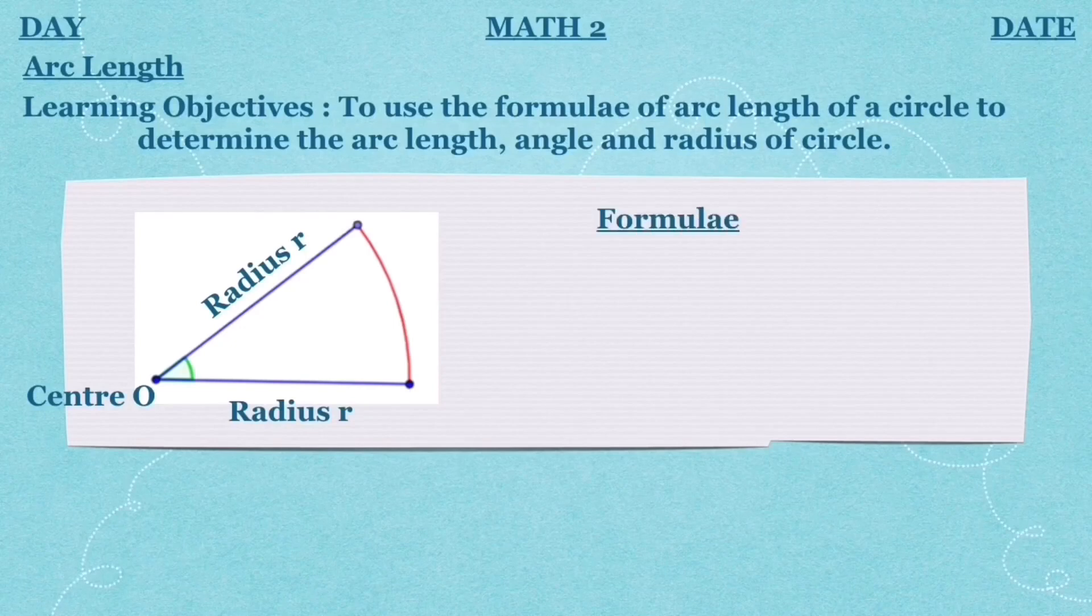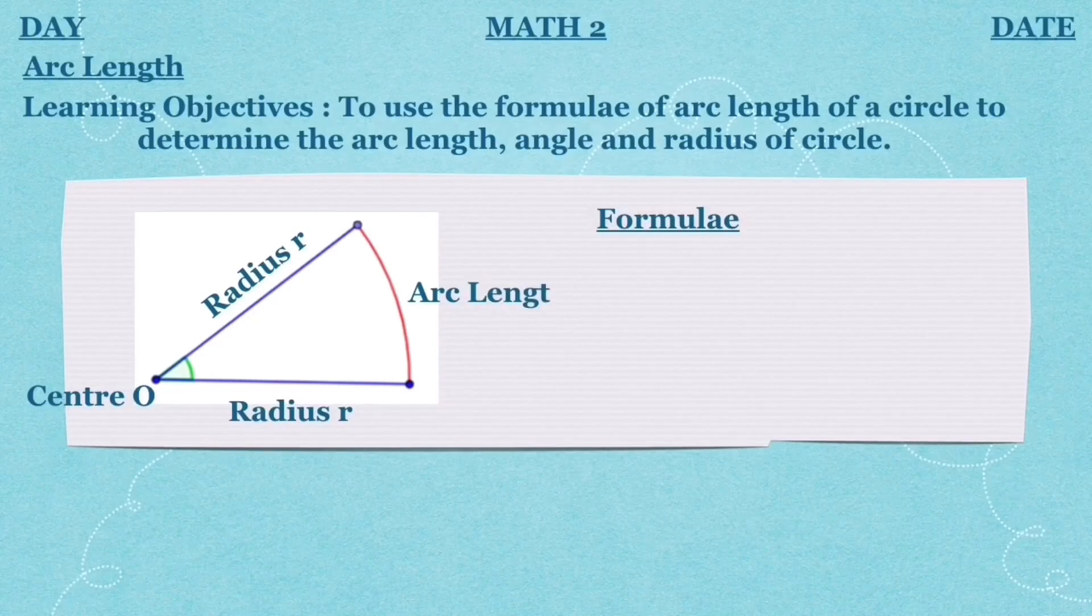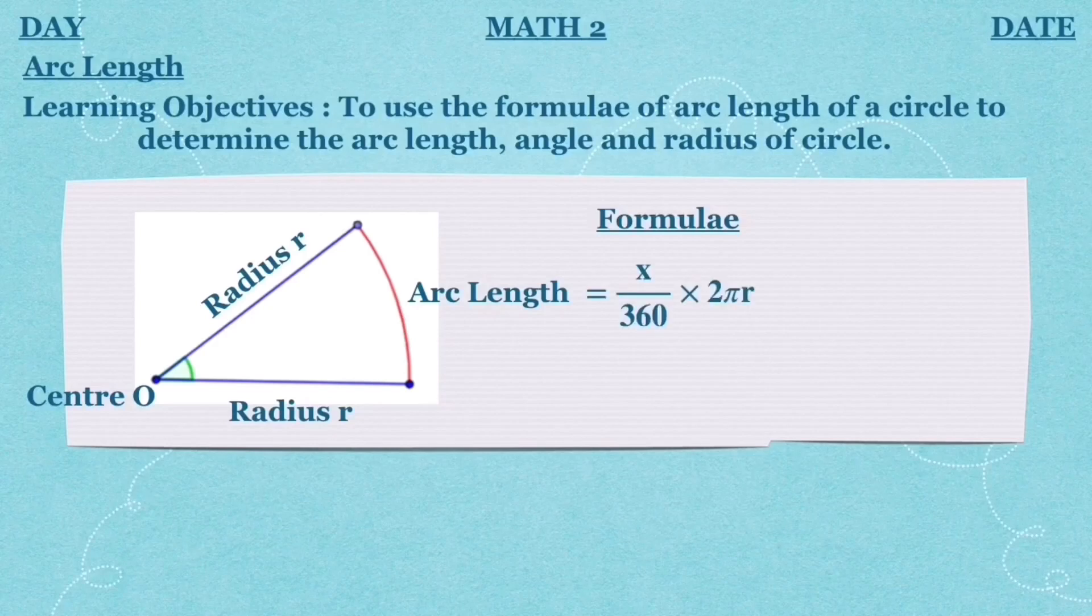The formula for arc length is very simple. You take the angle inside, which is x, divide by 360, and times with 2πr. So this is x, the angle inside, divided by 360 times 2πr. Now look at the first example. We're going to discuss some examples for this subtopic.